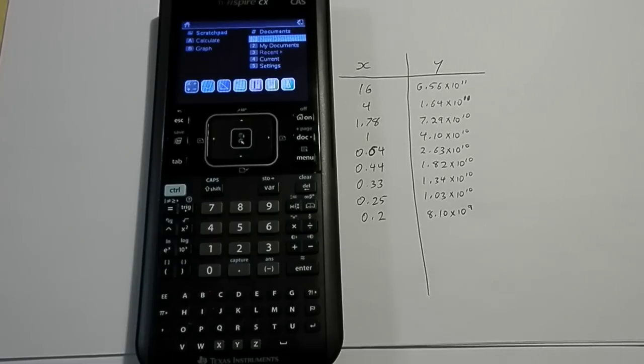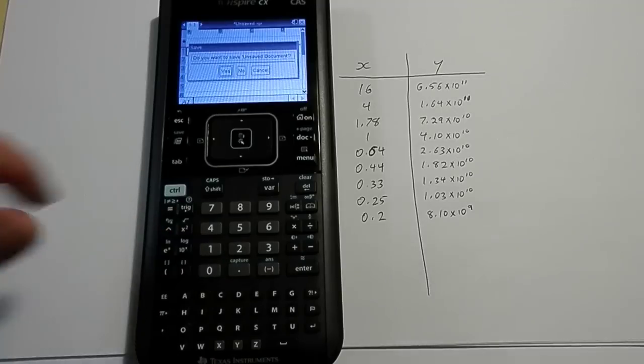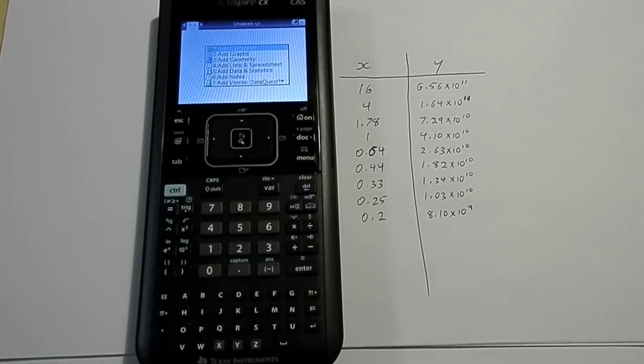You need things like the slope or the Y-intercept to be able to get the job done. So, in order to do this, first thing I'm going to do is start a new document. I'm just going to get rid of what I was previously doing there.